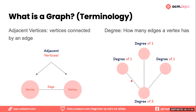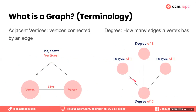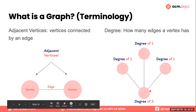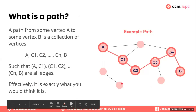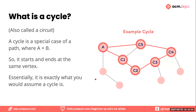Here's some terminology for talking about graphs. Adjacent vertices are vertices connected by an edge. The degree of a vertex is how many edges it has — for example, Dan here would have degree three with one, two, three edges, and this vertex would have degree one. A path from vertex A to vertex B is a collection of vertices A, C1, C2, ..., B such that all consecutive pairs are connected by edges. A cycle, also called a circuit, is a special case of a path where A equals B — it starts and ends at the same vertex.